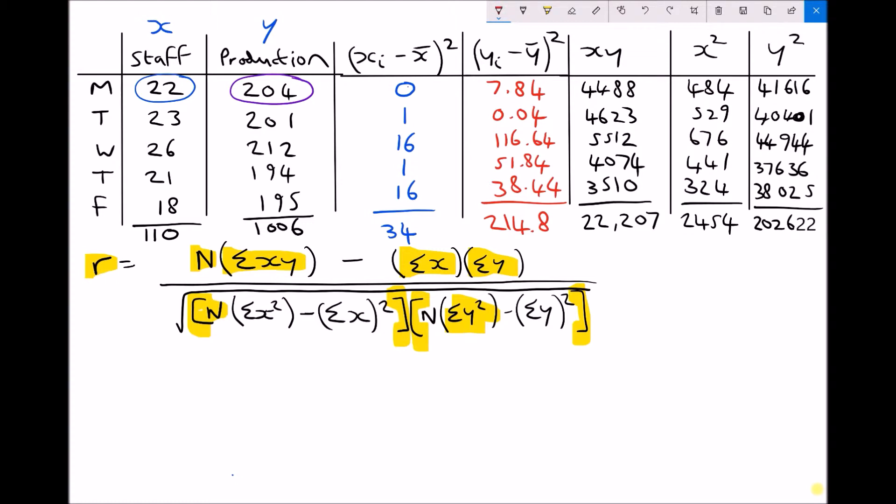So let's plug our numbers in to calculate our product moment correlation coefficient r. And as we go through I'll just circle where each of these values are coming from. First of all, on the top of our fraction we have n, which we've already said is 5, there's 5 sets of data, times the sum of xy. Well the sum of xy is this 22207 column. 22207.